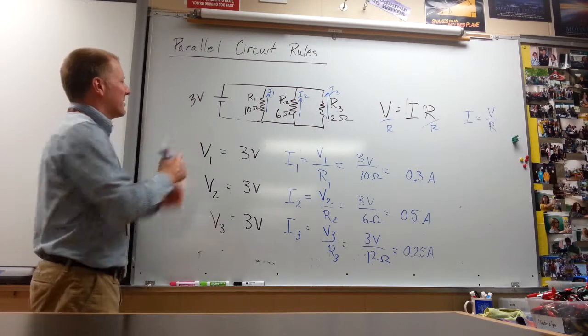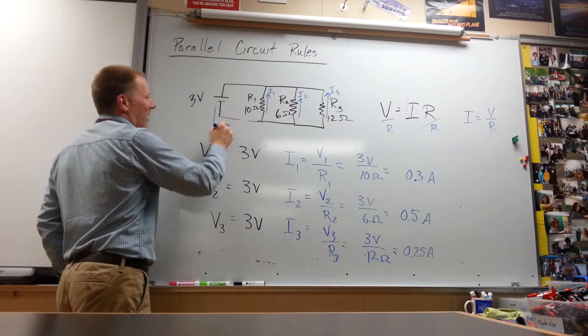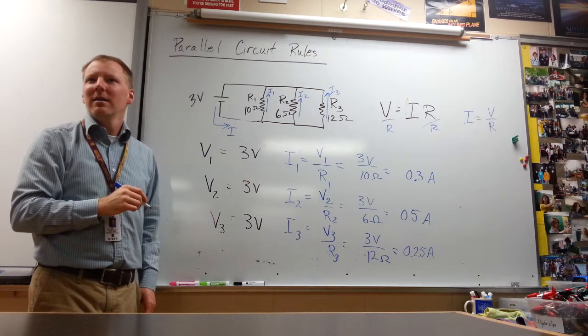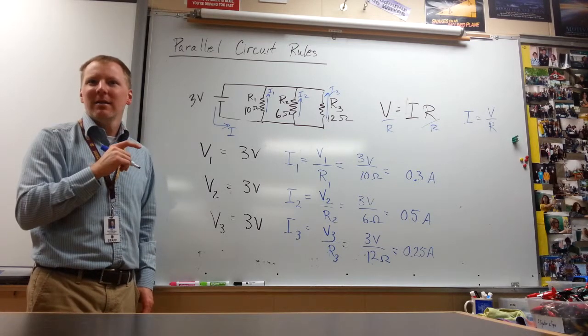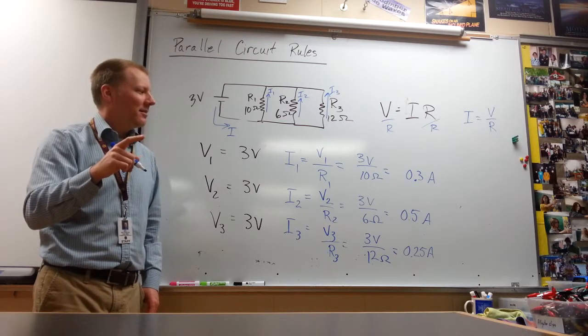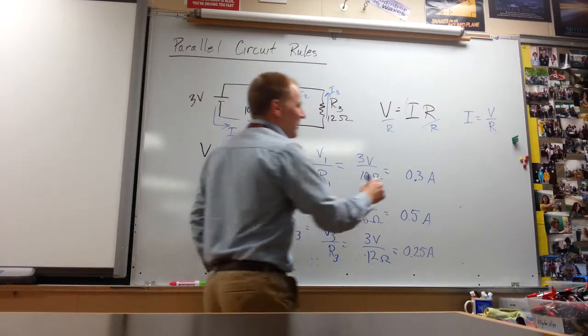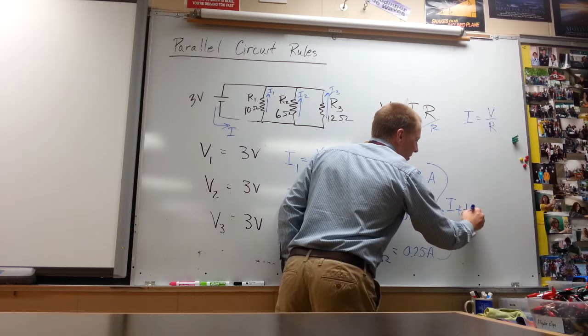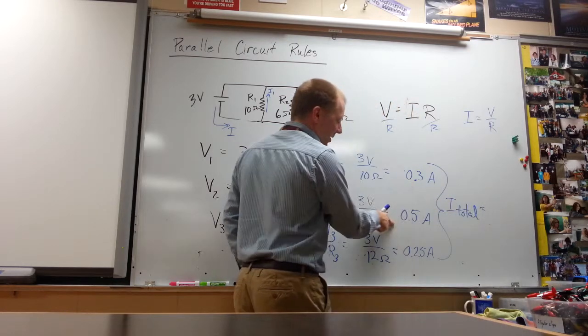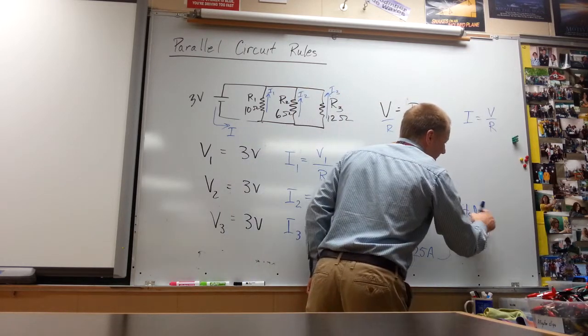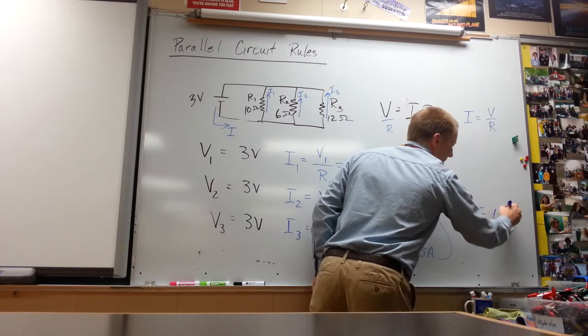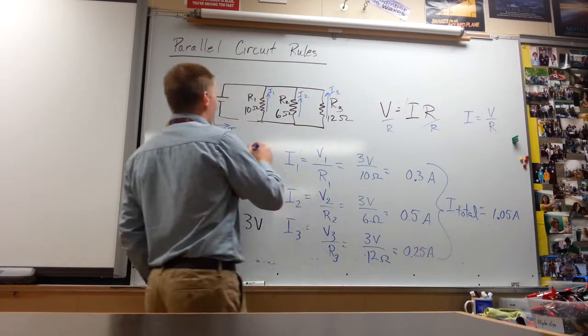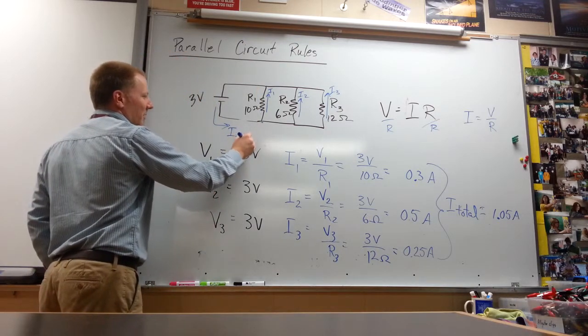How much current is coming out of our battery then? Yep. How'd you get that? Add them up. So our total current, you just add all of these up. We have 0.8, 1.05. So I'll say that's I total there.